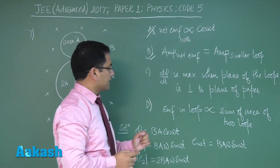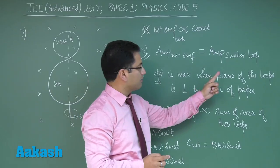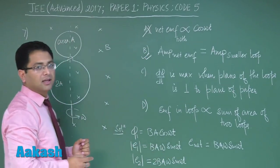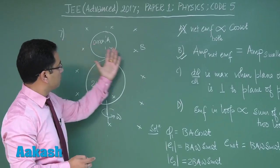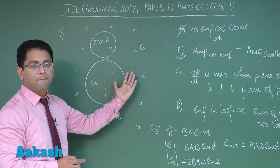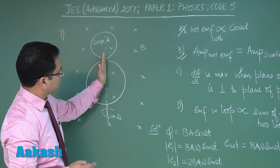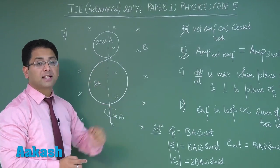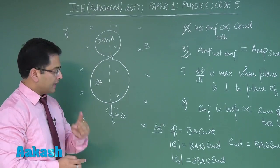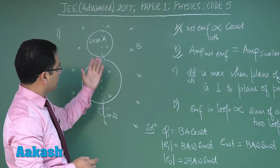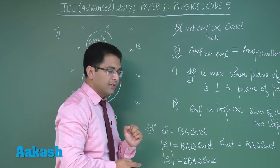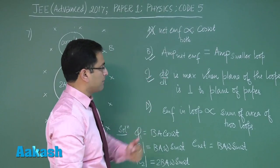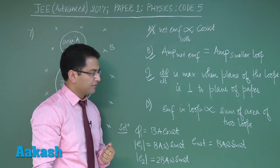Option C: d phi by dt is max when plane of the loop is perpendicular to the plane of the paper. Initially the plane of the loop is parallel to the plane of the paper. When this orientation comes to us, in that situation the plane of the loop will be perpendicular to the plane of the paper, and at that particular situation, because theta is omega t, that would be maximum at pi by 2. So option C would be correct because d phi by dt is the EMF.